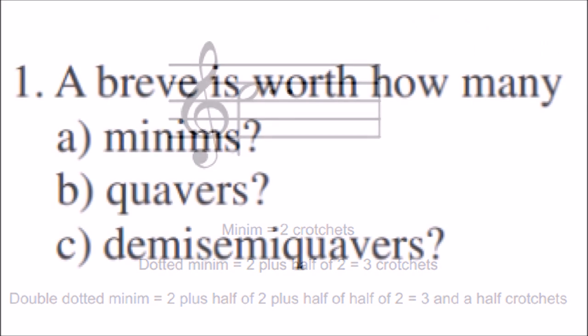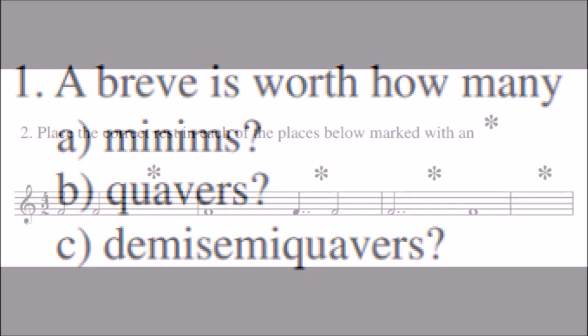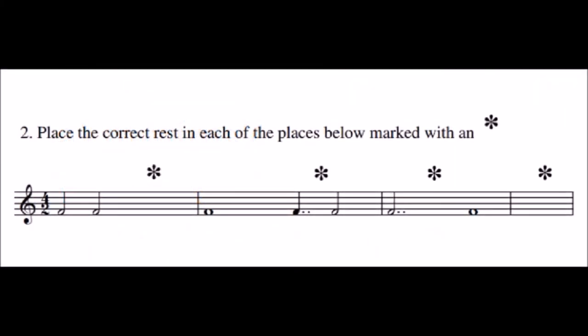Now let's see how much you have understood. A breve is worth how many minims, quavers, and demi-semi-quavers? And could you put the correct rest in the places marked with an asterisk below?